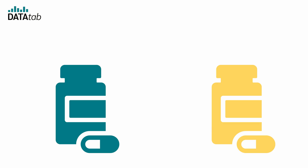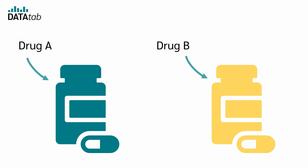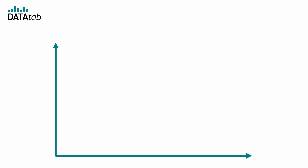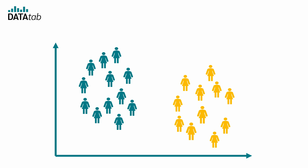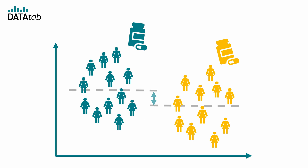An example: we would like to compare the effectiveness of two painkillers. We randomly divide 60 people into two groups. The first group receives drug A and the second group receives drug B. Using an independent t-test we can now test whether there is a significant difference in pain relief between the two drugs.